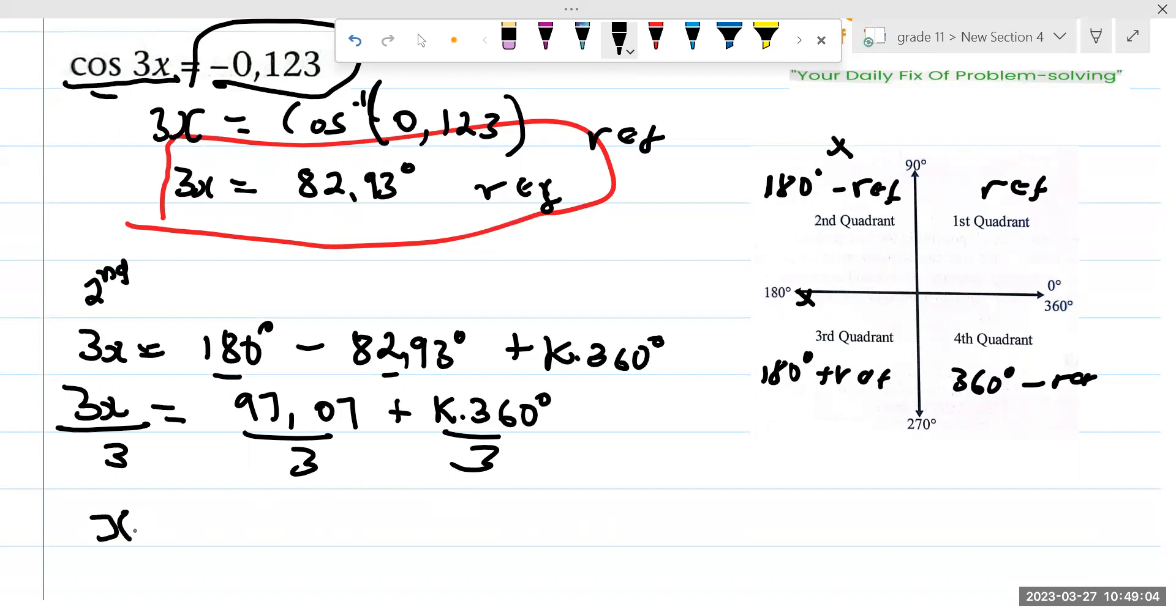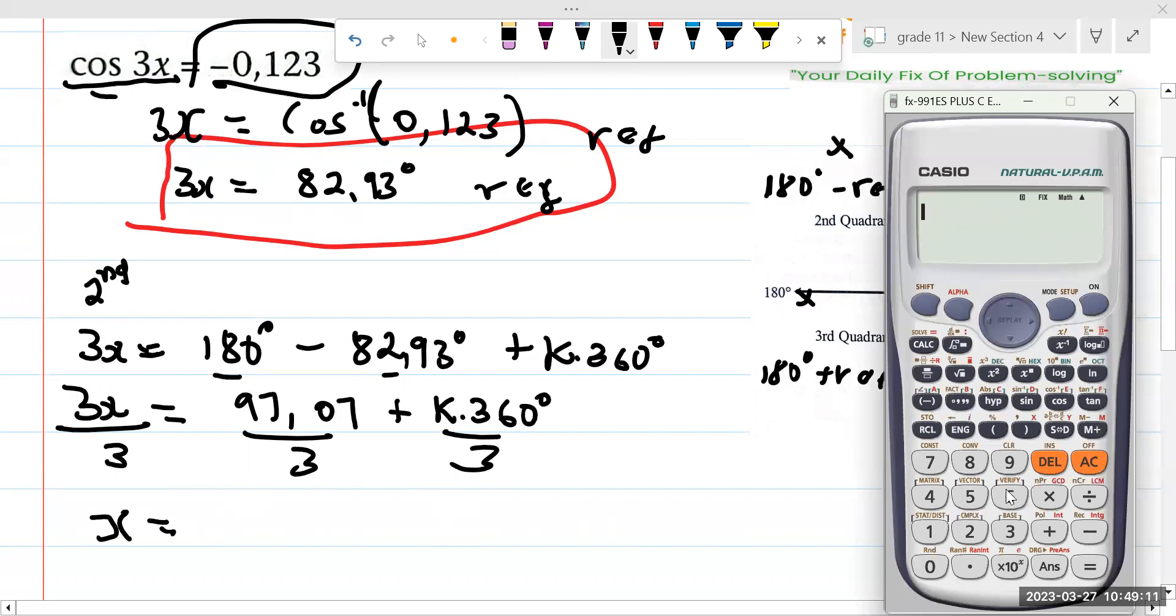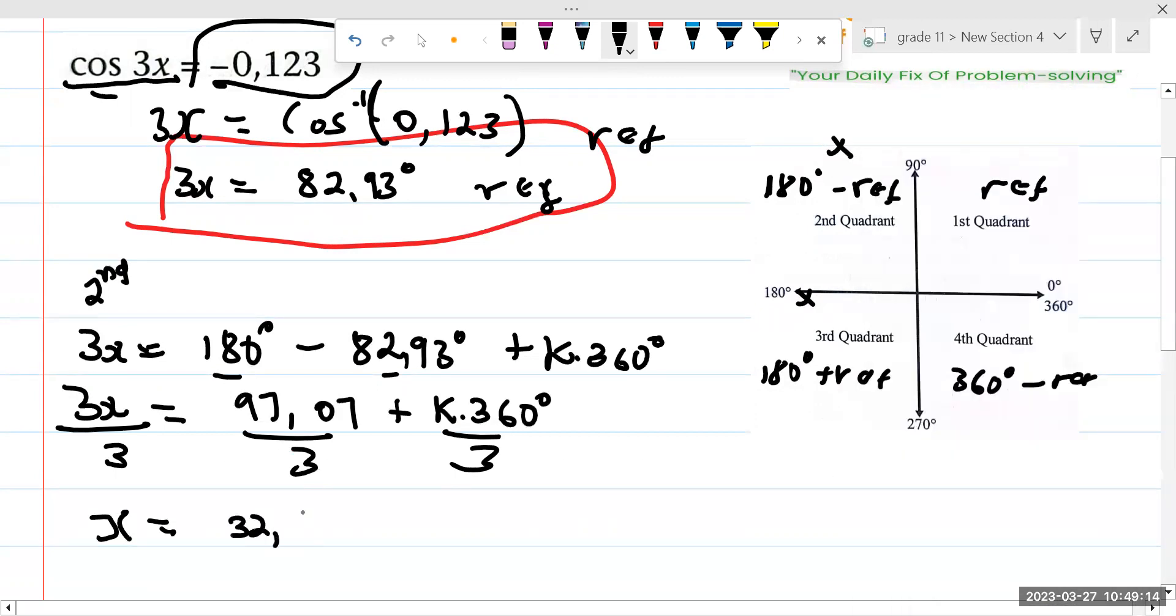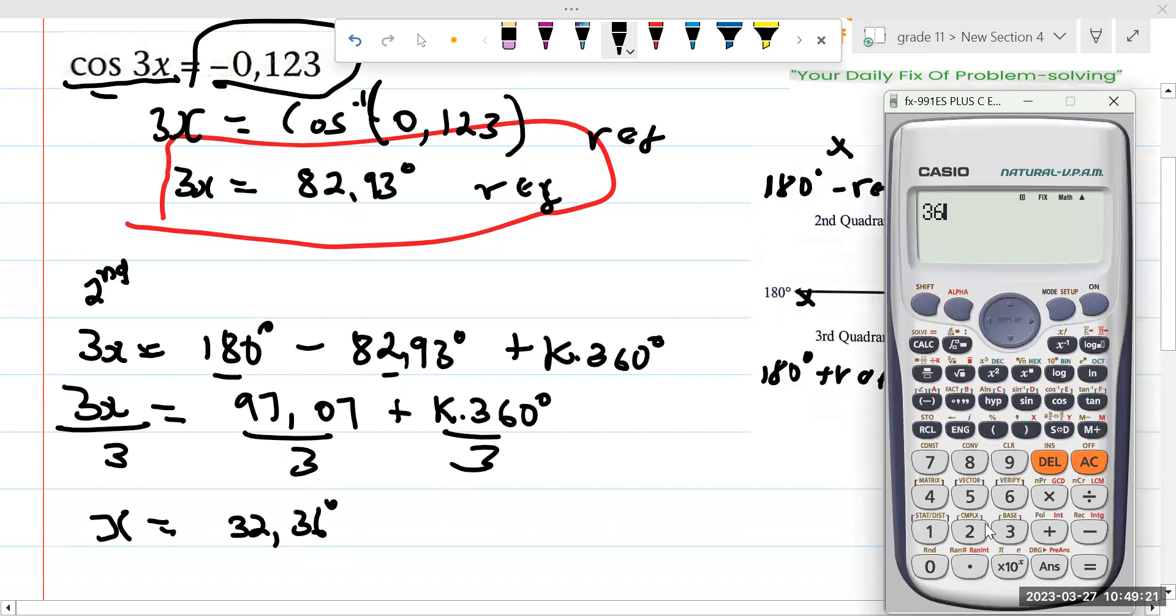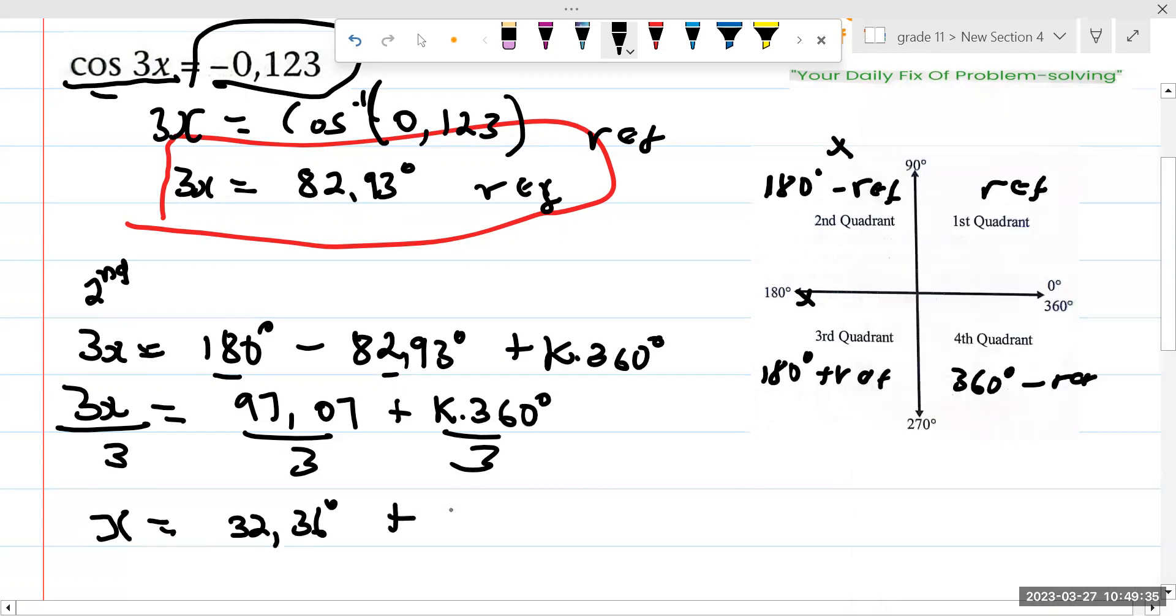So if you are going to divide everything by 3, it says x is going to be equal to, it's 32.36. And then we are going to say 360 divided by 3, it gives us 120. It says plus K multiplied by 120. So our period, it's not for us to decide that automatically tells us our period. Because of this 3 here, our period is no longer 360, but it's going to be 120.